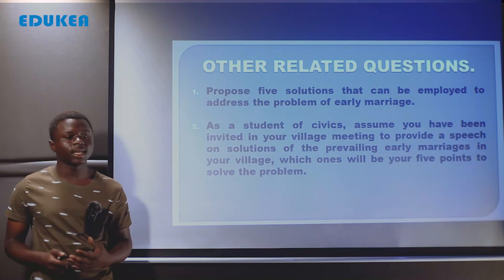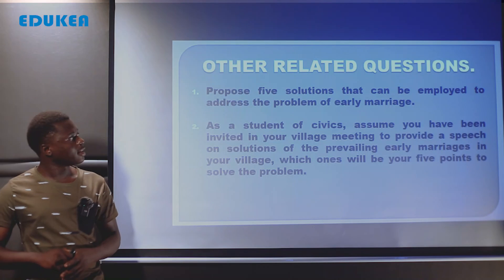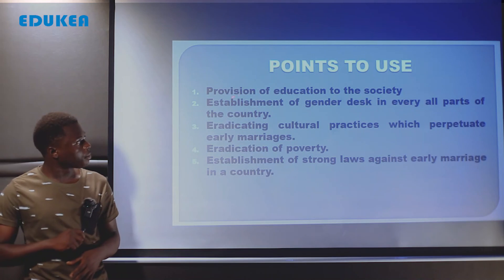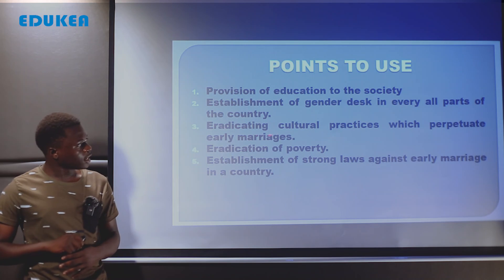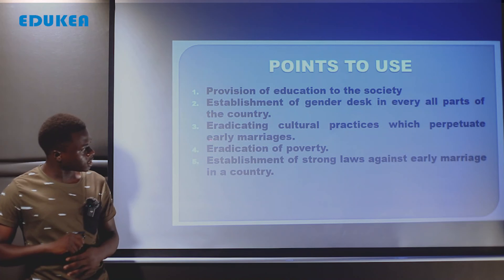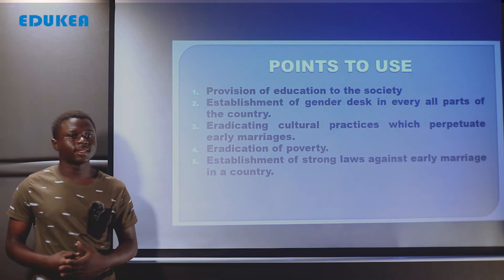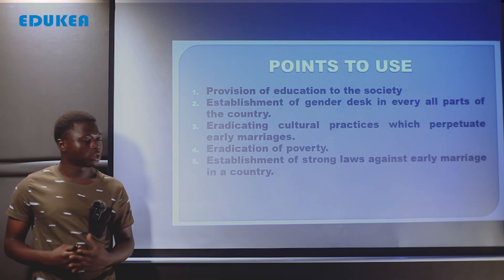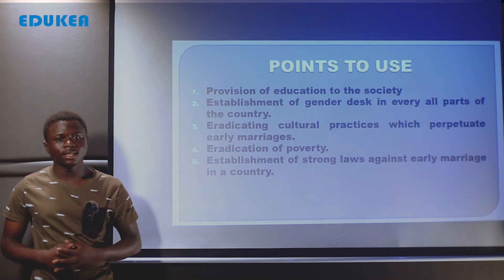This question relates to our core question that we have already covered. The list of points a student may use to tackle these questions is: provision of education to the society, establishment of gender desks in all parts of the country, eradicating cultural practices which perpetuate early marriage, eradication of poverty, and establishment of strong laws against early marriage. This is the example points used to answer our core question, and this marks the end of this session. See you next session.